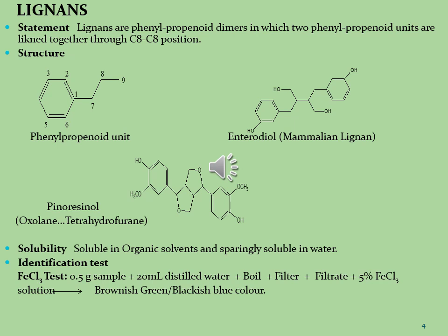Enterodiol is formed by bacteria in the intestinal tract from the plant lignans matairesinol and secoisolariciresinol, which exist in various whole grains, cereals, barley, rye, wheat, seeds, nuts, legumes, and vegetables. Enterodiol is used as a biomarker for the consumption of soybeans and other soy products.